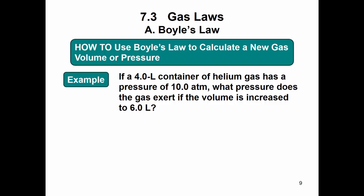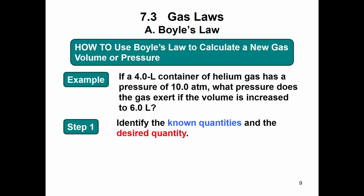So we can obviously do some practice with this and do calculations. If we have a four liter container of helium gas and it has a pressure of 10 atm, we want to find what pressure will the gas exert if the volume is increased to six liters. So right away from my law, I know if volume increases, then pressure has to decrease. So if you get a number that's higher than 10, you know you did something wrong.